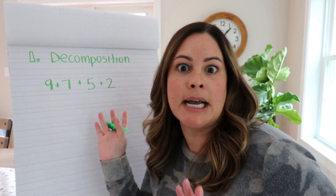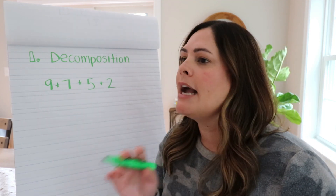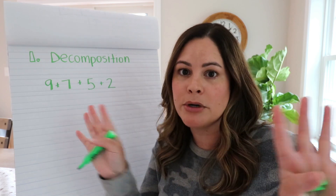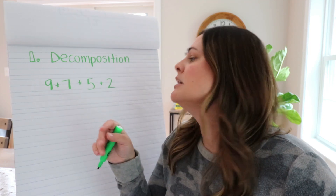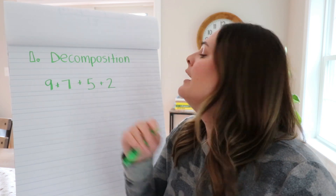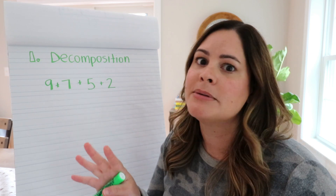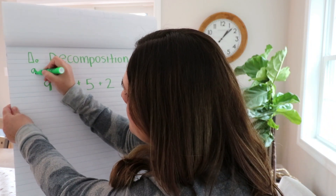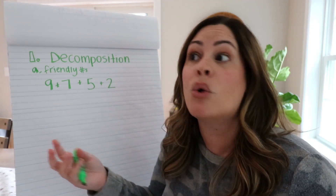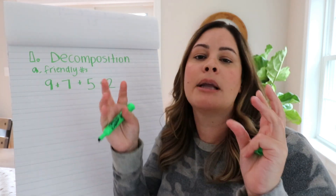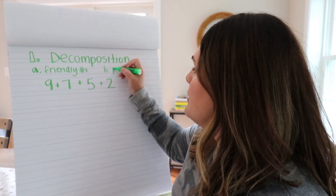You might want to use this exact example for a number talk with your first and second grade students. Go ahead and throw that up on the board and then ask your students to solve it mentally — no paper, no pencil. Also notice how I wrote it horizontally; that's important for these types of number talks to kind of discourage the algorithm. Then ask students how they solved it. There are two different ways students might use decomposition: A — to make friendly numbers, and B — by place value.